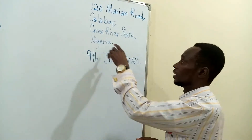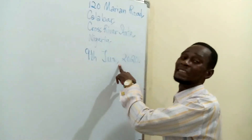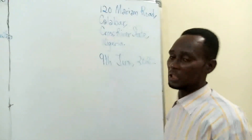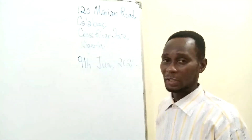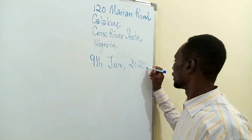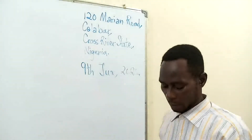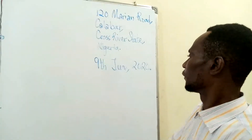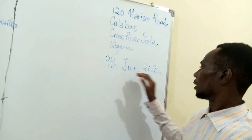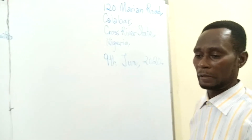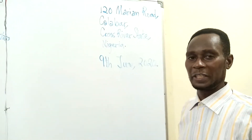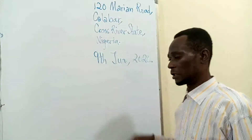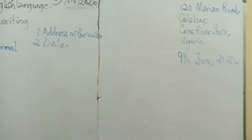It is mandatory that you put a comma after the month. It is necessary that you put the ordinal suffix — the TH. At the end of the year, please put a full stop. These are the ways you write your date. The date gives us three pieces of information: the date of writing, which is 9; the month of writing, which is June; and the year of writing, which is 2020.